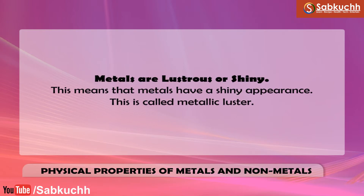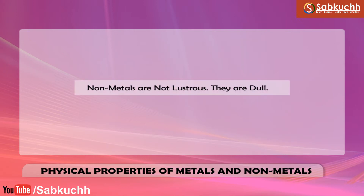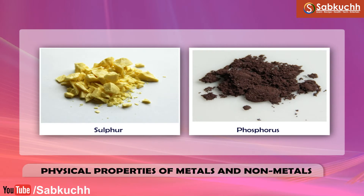Luster. Metals are lustrous or shiny, which means that metals have a shiny appearance. This is called metallic luster. For example, gold and silver are used for making jewelry because they are bright and shiny. Non-metals are not lustrous; they are dull. For example, sulfur and phosphorus are solid non-metals which do not have luster.